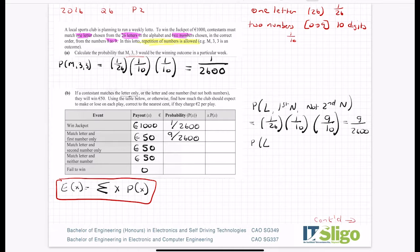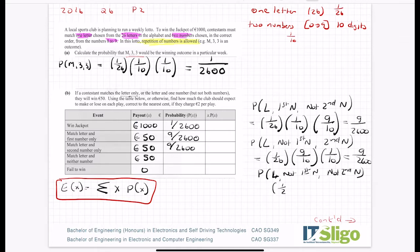The probability of the letter, not the first number and you do get the second number is 1 over 26, not the first number is 9 over 10, and you do get the second number. It's the same as the first line. These are the same, it's just in a different order. So again that is 9 over 2600. The probability that I match the letter, not first number, not second number is 1 over 26 of matching the letter, 9 out of 10 chances of not matching the number. 9 times 9 is 81 over 2600 chances of only matching the letter.